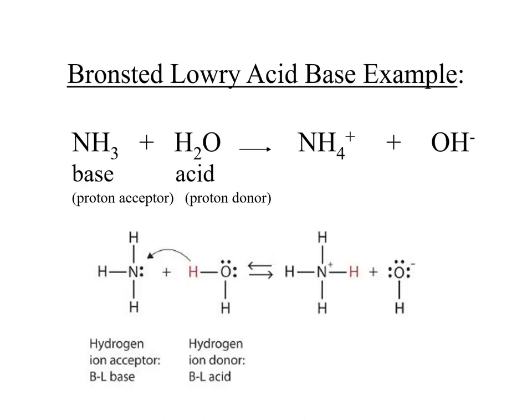Here is another example where we have NH3 as our base and water as our acid. Water is the proton donor. In this drawing, the hydrogen is being donated over to our NH3. When we donate the hydrogen, what's left is just OH by itself. It was neutral, but we're taking away a plus one charge, so we end up with a negative charge.